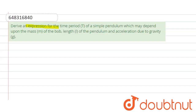Hello students. The question is: derive an expression for the time period T of a simple pendulum, which may depend upon the mass m of the bob, the length of the pendulum, and the acceleration due to gravity. So let us assume that time period T is directly proportional to the mass.